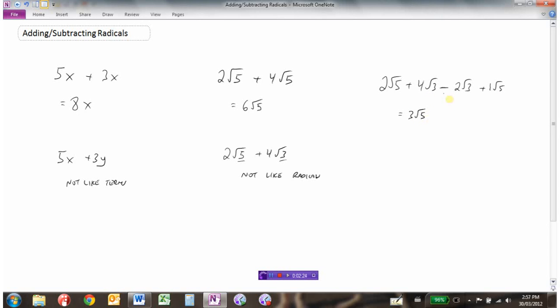So two √5 plus one √5 would be three √5's. And if we had four √3 take away two √3, well that would be down to two √3's. So we can only add radicals if they have the exact same number under the square root, like these two and then like these two.